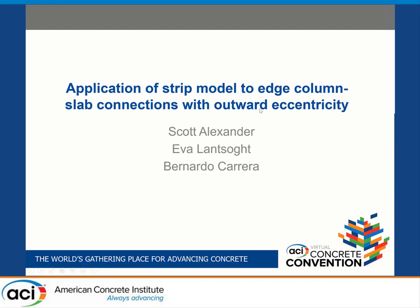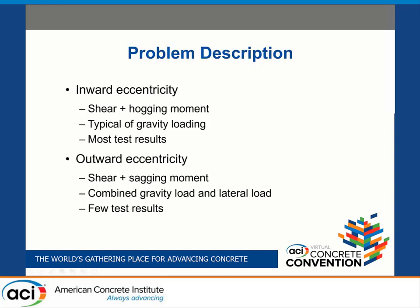Thank you very much, Mustafa. The presentation is on the application of strip model to edge column slab connections with outward eccentricity. To start, we need to define eccentricity. Eccentricity is going to be a ratio of a moment to a shear that's transferred to the column, and that moment is going to be relative to the centroid of the column. This is the kind of information you'd need for designing the column, not usually what we use in the traditional approach to shear and moment transfer, where we typically talk about centroids of critical sections.